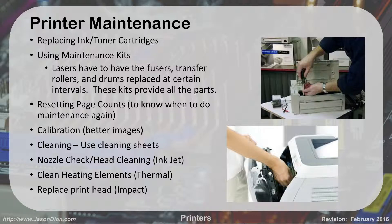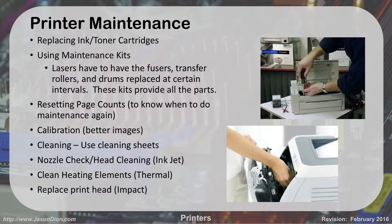Calibration is done to make sure we have the best images possible — very common with inkjet printers, to make sure the lines are properly aligned. For cleaning, inkjet printer nozzles can get clogged, so you run the cleaning mode, which over-pressures the ink to push out any buildup and clear the nozzles. The same idea applies to nozzle check and head cleaning. For laser printers, we can use cleaning sheets — special paper that attracts leftover toner in the machine to clean it out. For thermal printers, you've got to clean those heating elements; if the print head gets gunky, you'll get misprints.